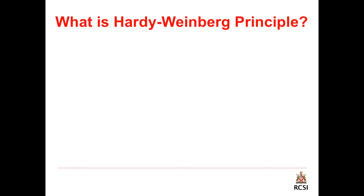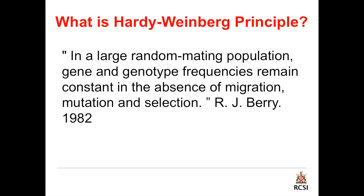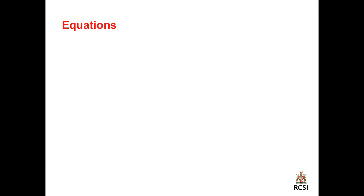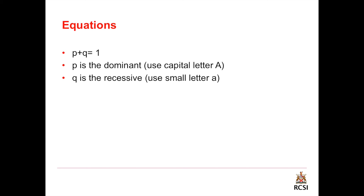What is the Hardy-Weinberg principle? In a large random mating population, gene and genotype frequencies remain constant in the absence of migration, mutation, and selection. p plus q equals 1, where p is the dominant allele, represented by a capital letter (e.g., capital A), and q is the recessive allele, represented by a small letter (e.g., small a).